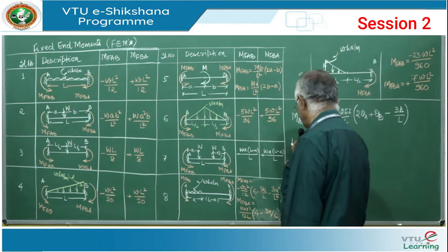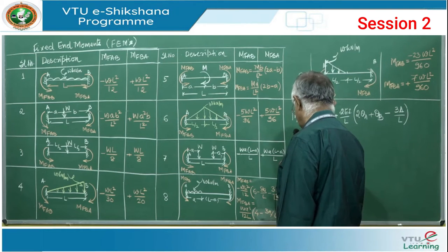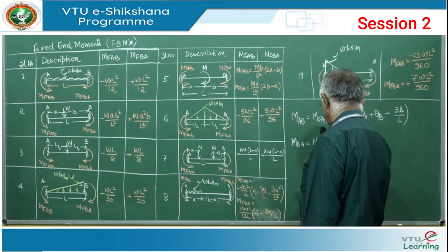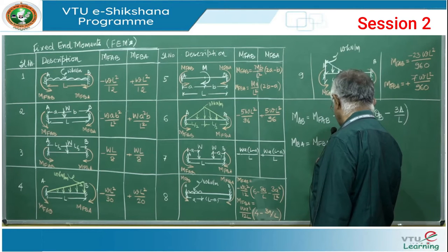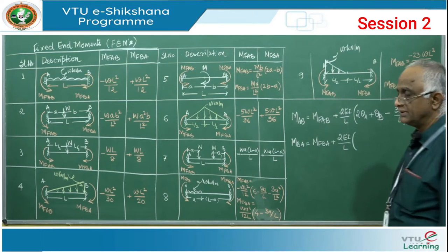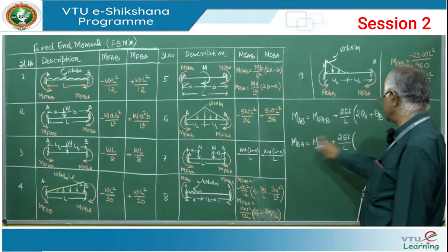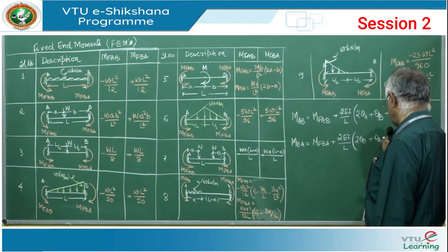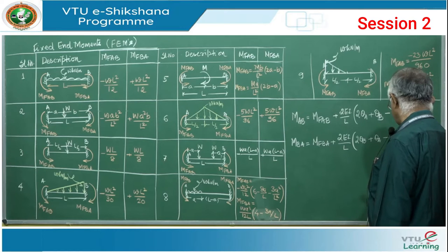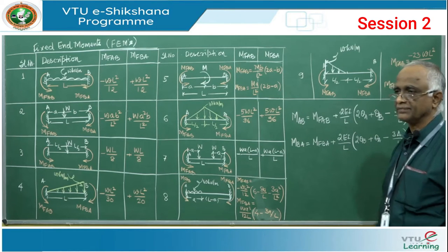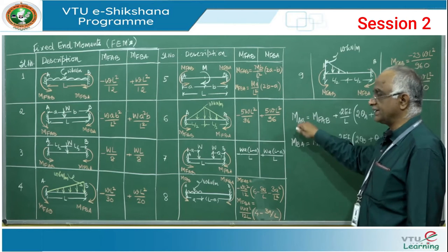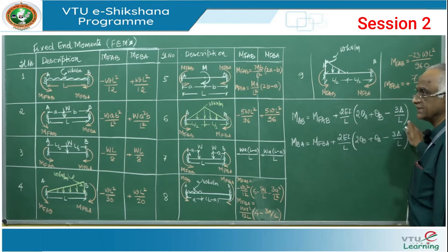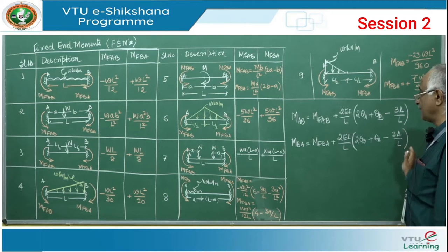For the same beam at the other end, the equation is M_BA equals M_FBA plus 2EI/L times (2θ_B plus θ_A minus 3Δ/L). The near end becomes B, so the first term is 2θ_B and the far end is θ_A. Any end moment of a beam has components of the two slopes at both ends plus the effect of support settlement.